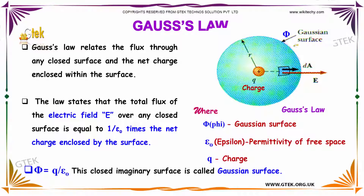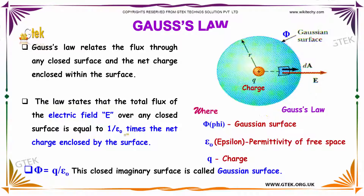You can see here how the Gaussian surface is indicated. This law states that the total flux of the electric field, indicated as E, over any closed surface is equal to 1 by epsilon-zero times the net charge enclosed by the surface.